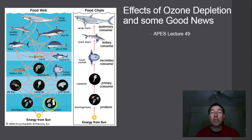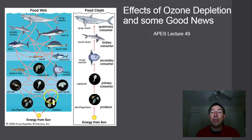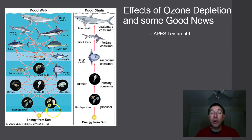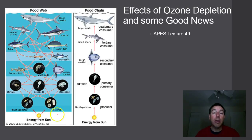If we have high concentrations of phytoplankton in the Antarctic oceans and we have that seasonal thinning during the warmer months when the phytoplankton are actually increasing, that means we have more UV hitting the ocean. UV can mutate cells and mutate DNA. Since phytoplankton is the base of the food chain in oceanic systems, if it deteriorates and dies off, the entire food chain will collapse. This is why ozone is really important in the role of the Antarctic food web.